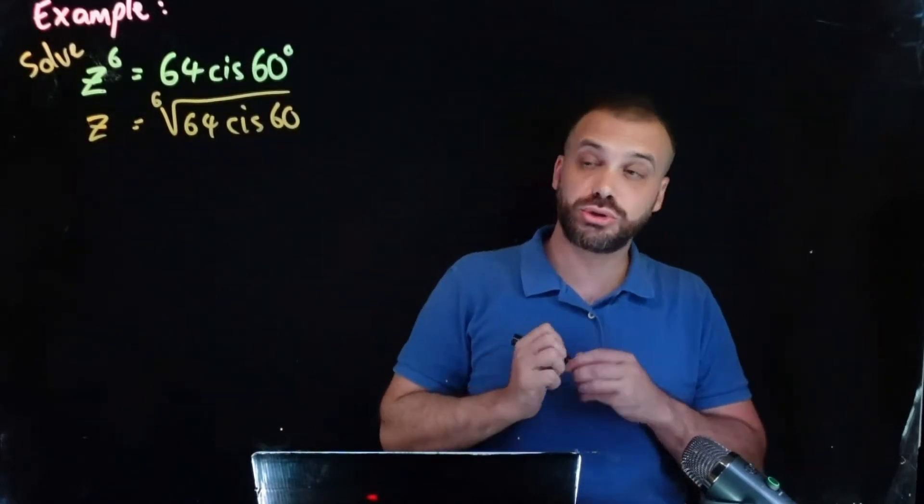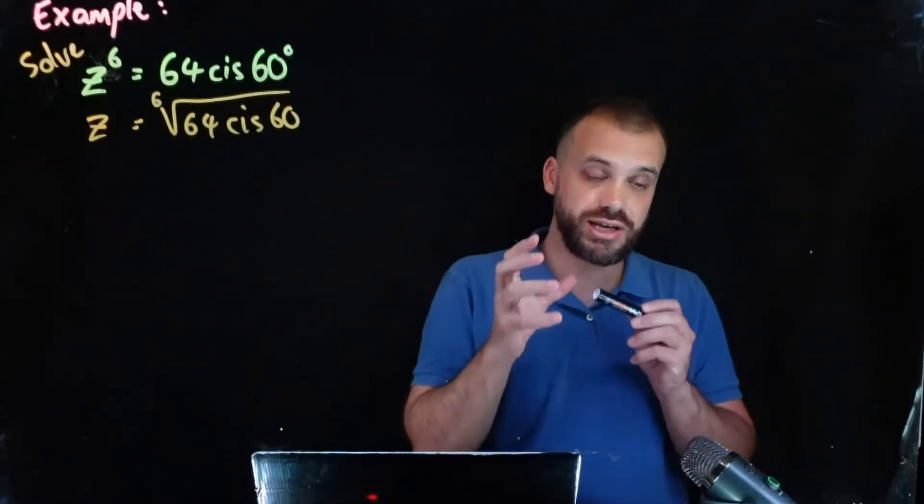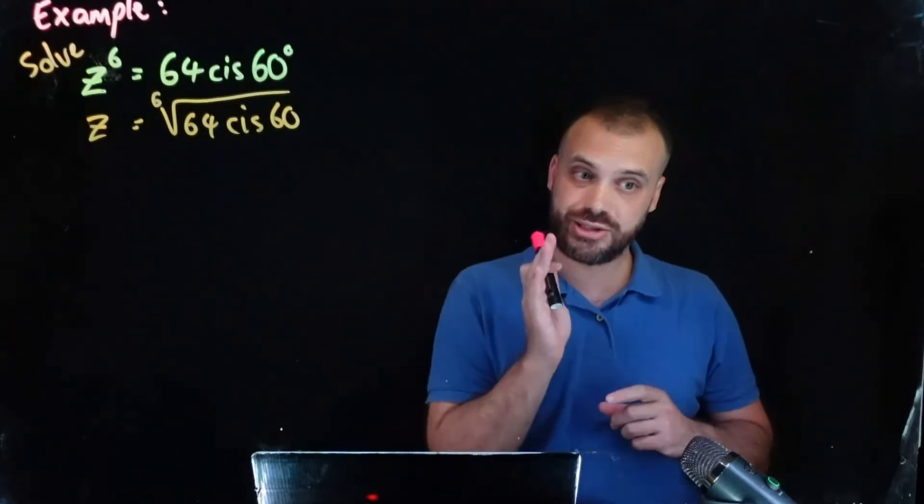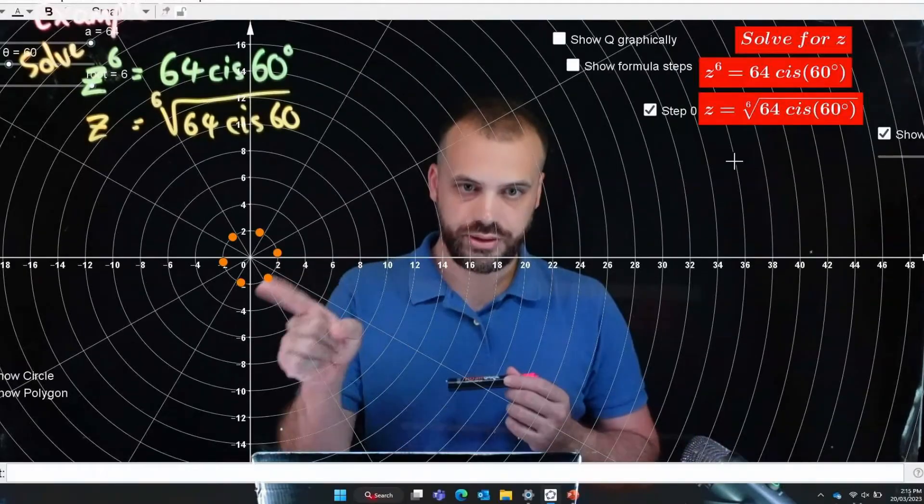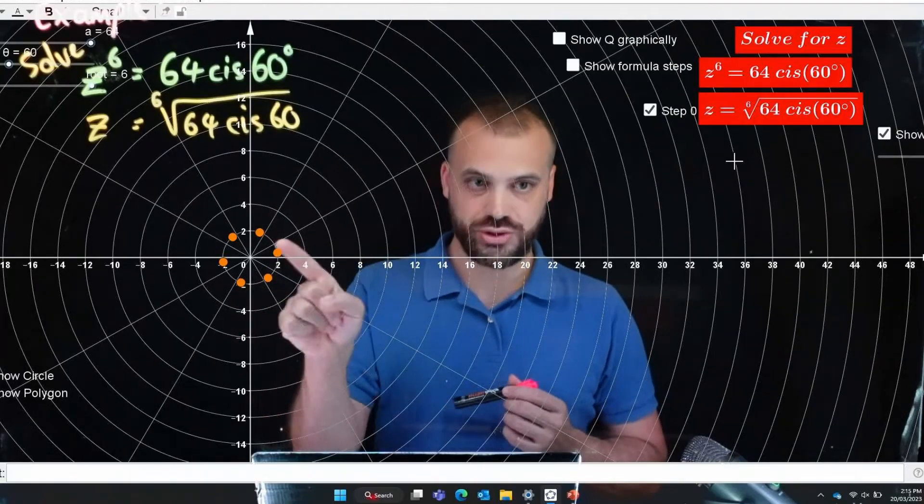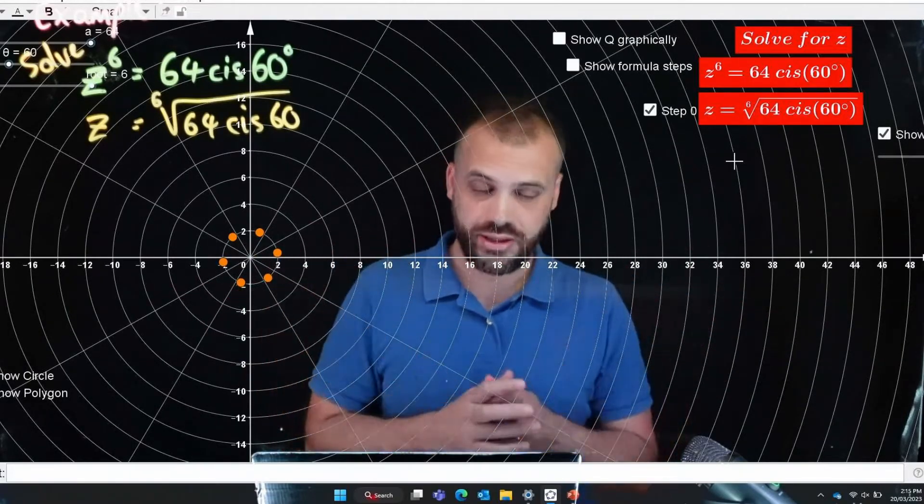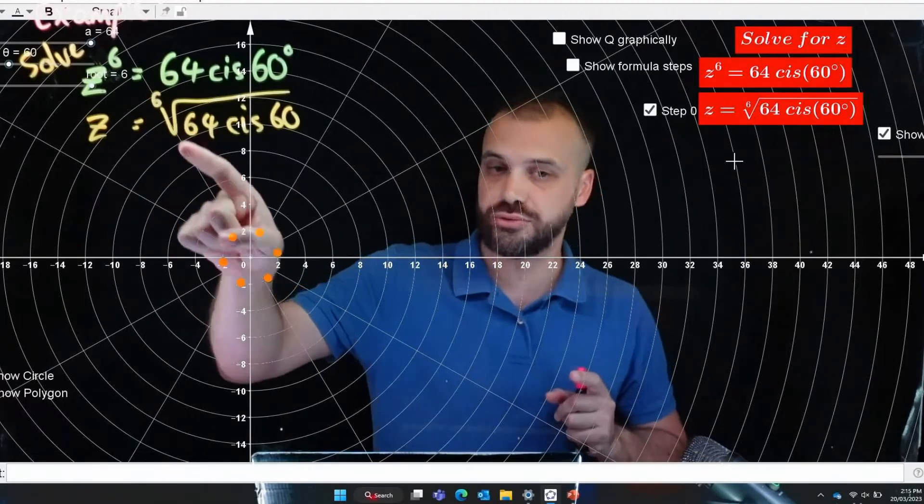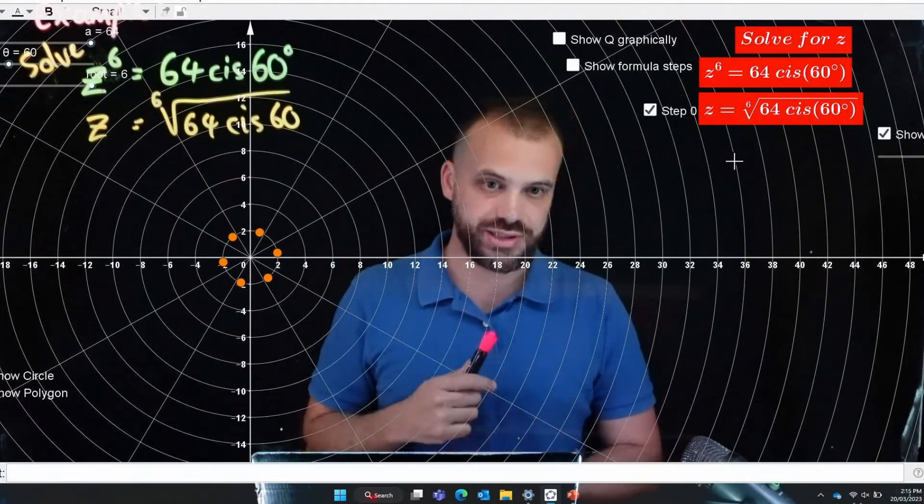Now the solutions to that, before I start actually solving them algebraically let's look at the solutions. So these six solutions are our answer. There are six solutions to the sixth root of 64 cis 60.